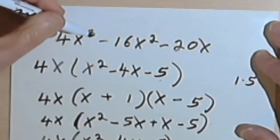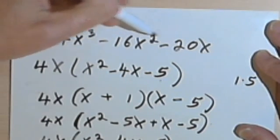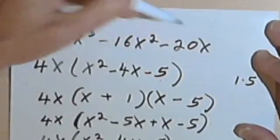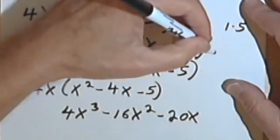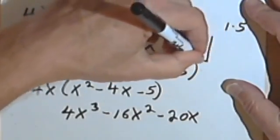I started out with 4x to the third, minus 16x squared, minus 20x. So my factorization is correct. It was this one.